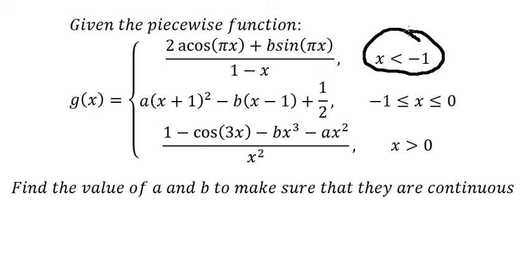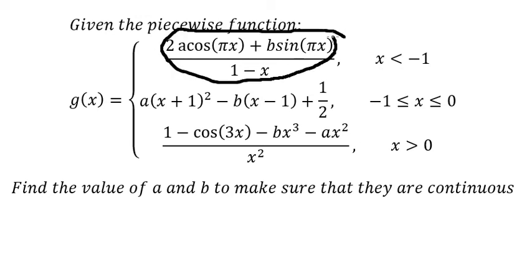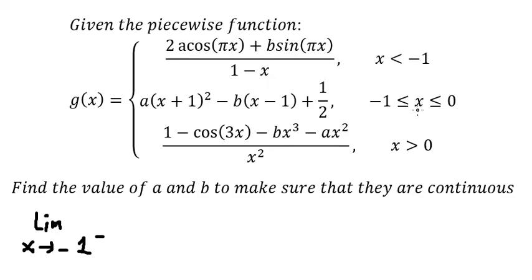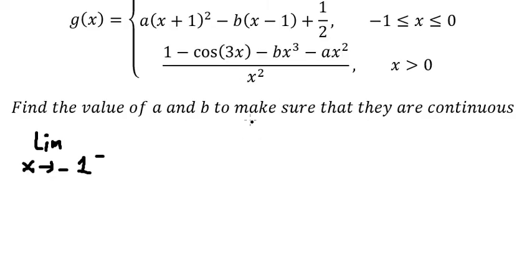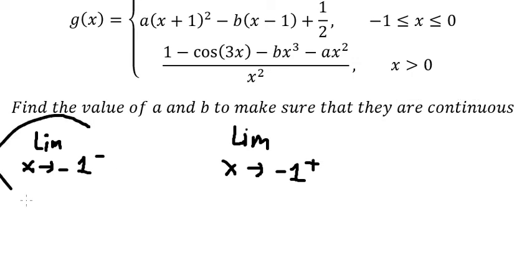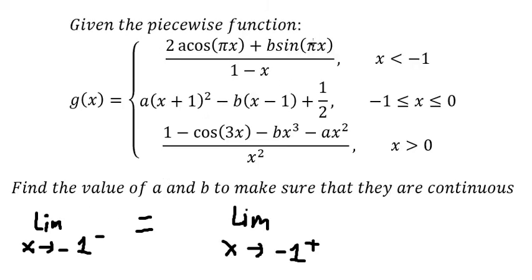When x is smaller than negative one, this is about the limit on the left. When x is greater than or equal to negative one, this is about the limit on the right. Because if we want to make it continuous, the limit on the left should be equal to the limit on the right.